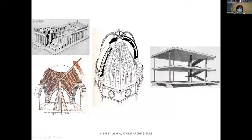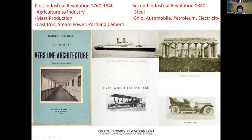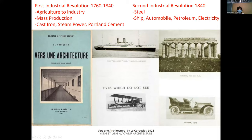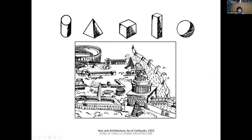From 1760 to 1840 you have the First Industrial Revolution, where society transitioned from agriculture to industry, bringing mass production — the reproduction of the same modules. Cast iron, steam power, and cement are all invented. Le Corbusier also drew the Second Industrial Revolution: the invention of cruise ships and automobiles. He compares this to the Parthenon and asks: what are we doing? Why are we still doing this? We have new materials and are in a different world — we must invent a new language.